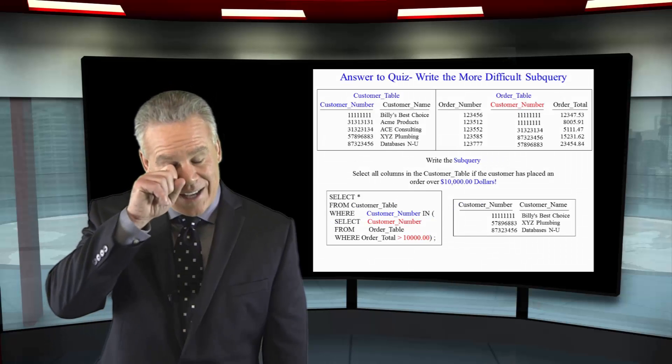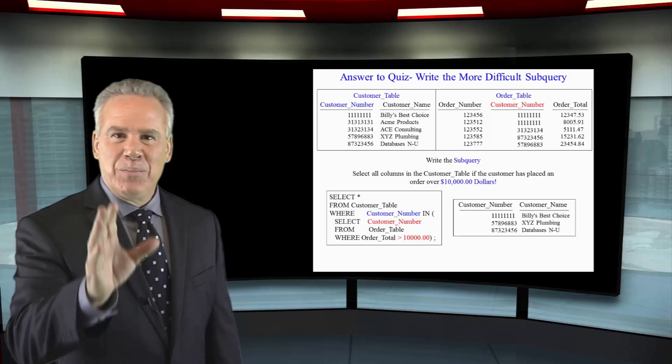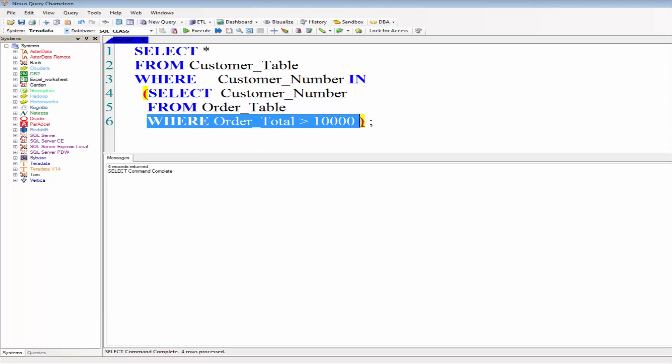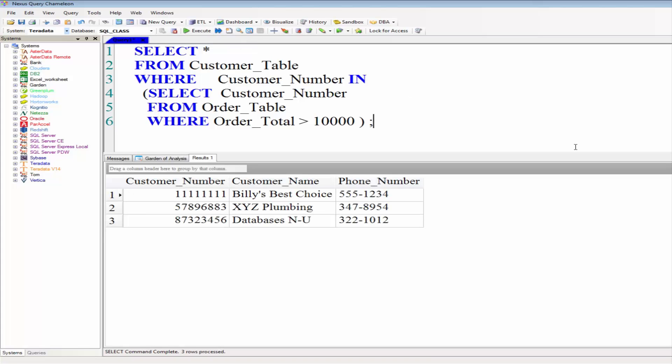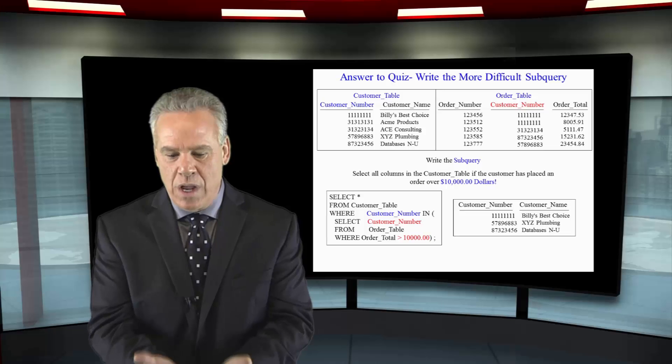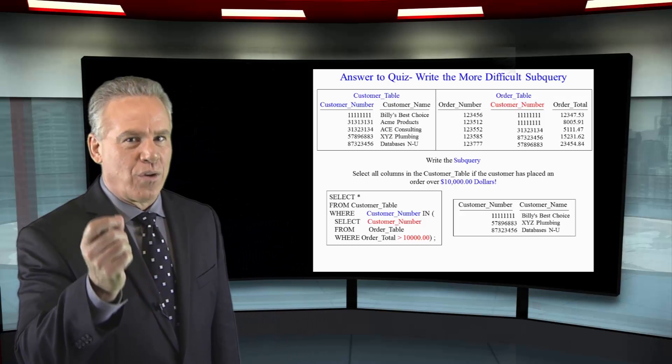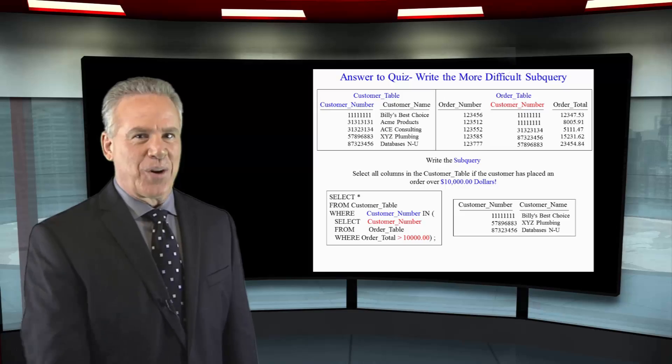You are growing up so fast. Oh gosh, I love them. Beautiful work here. Select everything from customer table where customer numbers in. Select customer number from order table where order total was greater than $10,000. This went to the order table. It brought up just the customer numbers if that order was greater than $10,000. That's good work.